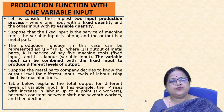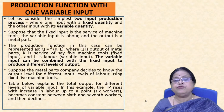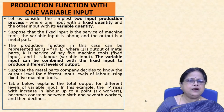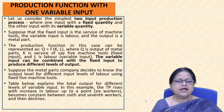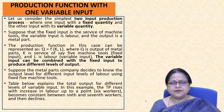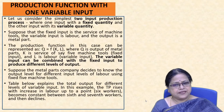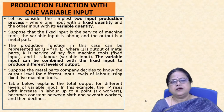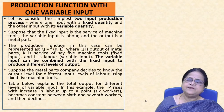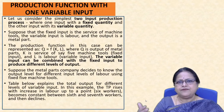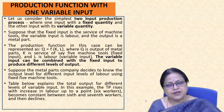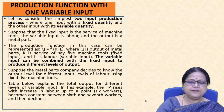Now we consider the production function with one variable input — one factor is fixed and the other is variable. Suppose capital (machine tools) is fixed and labour is the variable factor. Output q represents metal parts, and K represents the services of, say, five machine tools. As labour is combined with fixed capital, different levels of output are produced — for example, one worker produces two metal parts per day, four workers produce eight metal parts per day.